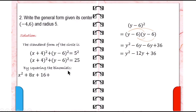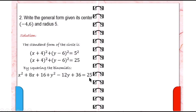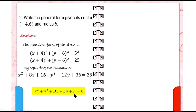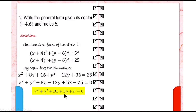So y minus 6 raised to 2 is equal to y squared minus 12y plus 36, equals 25. We just copy 25 since we already simplified it. Next, arrange the terms following the general form: x squared plus y squared plus dx plus ey plus f equals 0. We write x squared plus y squared, then the dx term, which is 8x, and then the ey term with the y variable.